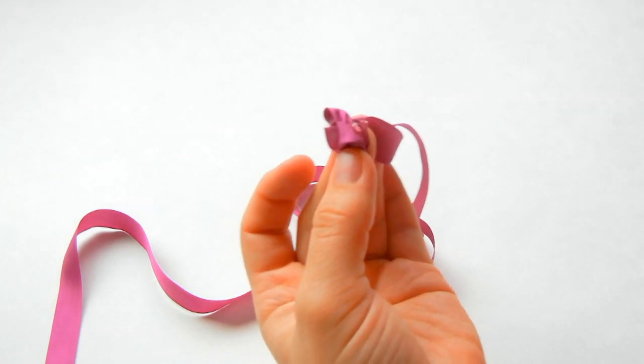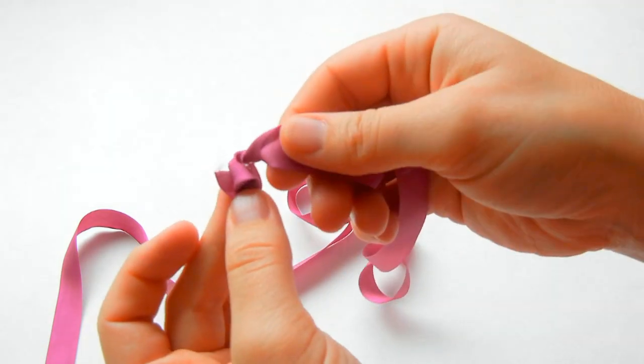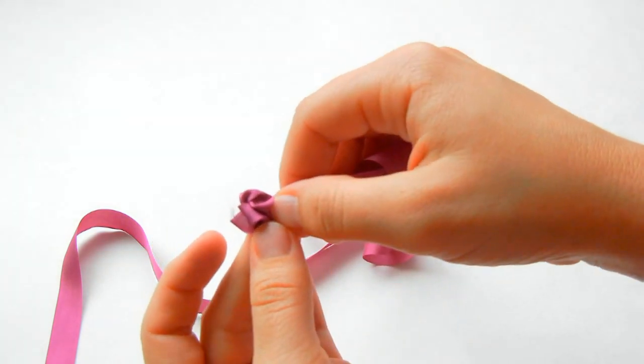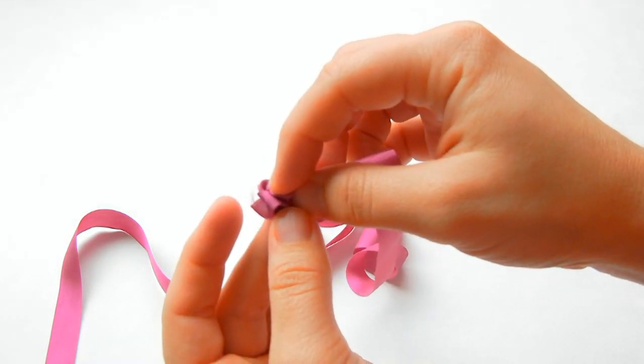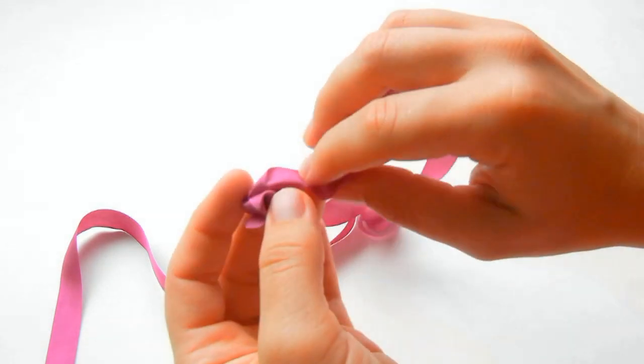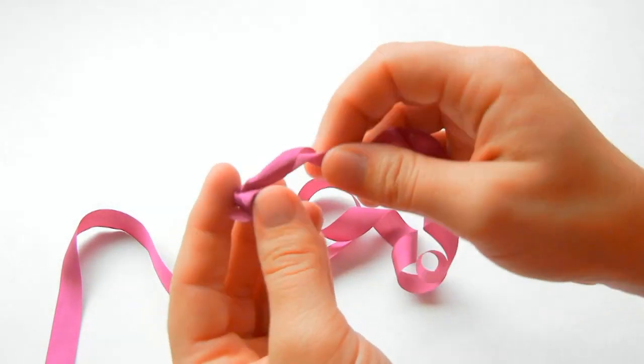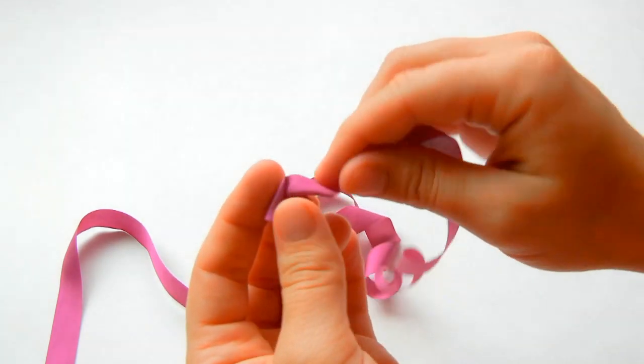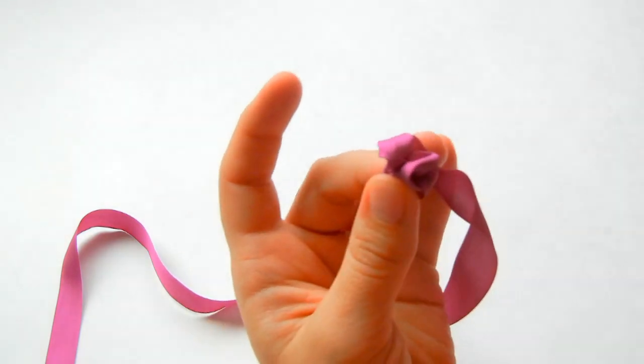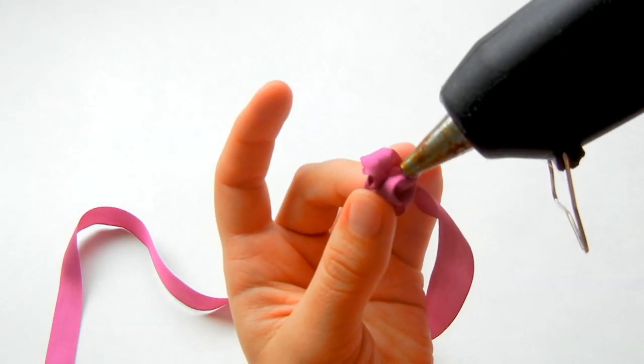Bring it over and then just let that get secure. Go ahead and roll it a few more times and hold it with your other fingers, and place a dab of glue.